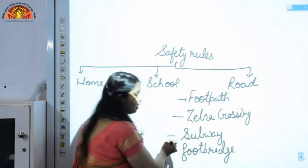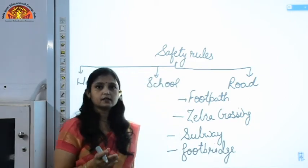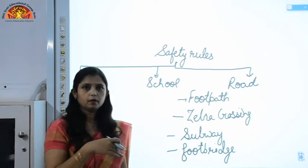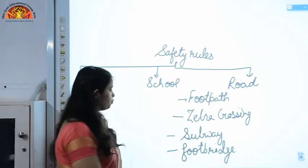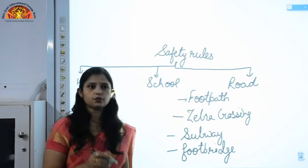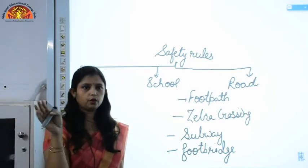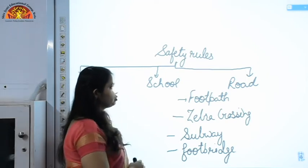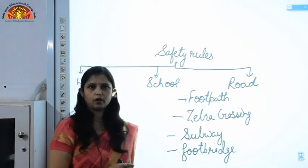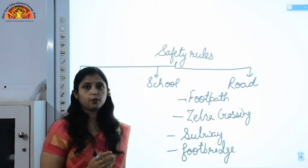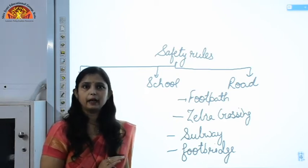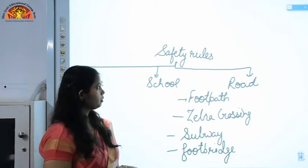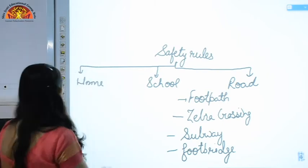A subway is a tunnel built across the road below the road. A footbridge is a bridge built over the road that connects the two sides. You should also not play on the road. These are some of the safety rules to follow while you are at different places.